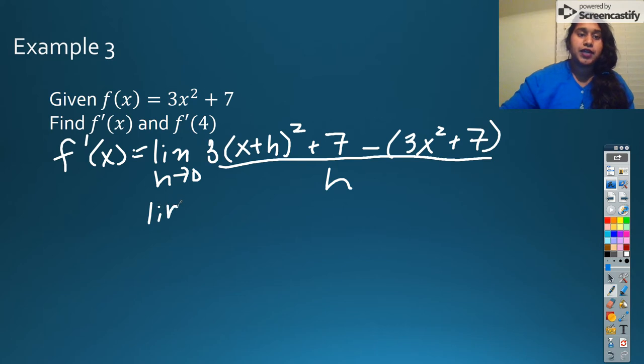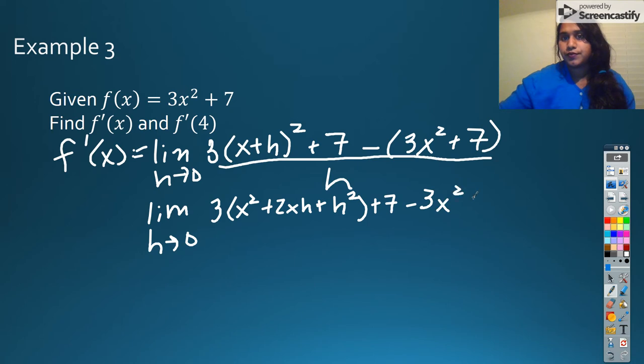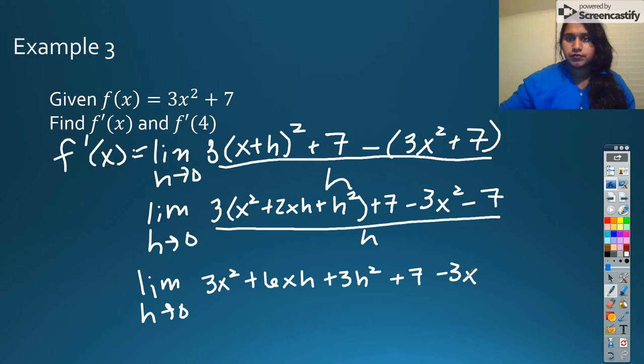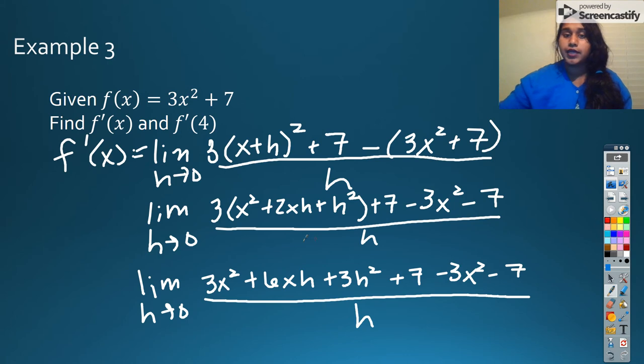Then we're going to simplify out, get rid of anything we can. And again, I'm going to distribute that 3. And what I want to do now again is cancel out anything I'm allowed to cancel. So let's go ahead and cancel out the 3x, negative 3x, positive 7, negative 7. And that's what we got back down to.